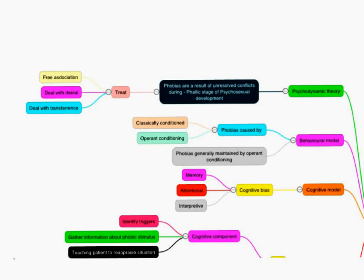For example, little Hans, who, through the Oedipus complex, developed a phobia of horses, horses being a symbolic representation of his father. Now, we could treat this with free association, where we ask the patient to say whatever comes to mind, and we look for recurring themes. We could then deal with the denial, the transference, etc.